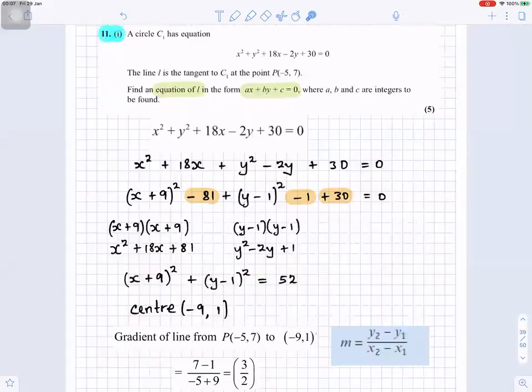First thing we want to do, we want to complete the square. Find half of 18 is 9, so have x plus 9 squared. And when you multiply x plus 9 times x plus 9, you get x squared plus 18x plus 81. So we have to minus 81 because there's no 81 here.